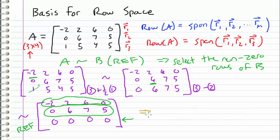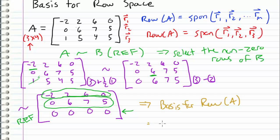So now I can say that the basis for the row space of A is equal to the set of vectors negative 2, 2, 6, 0, and 0, 6, 7, 5.